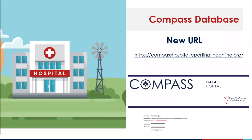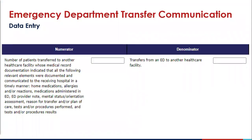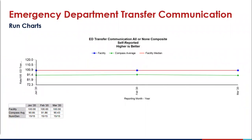We wanted to share that we have a new URL for the Compass data portal. Currently the old URL auto-links to the new URL, but this linkage will be short-term, so please plan to save it to your favorites. When we talk about data entry into the Compass data portal, this is a sample of what that looks like. This data portal has been in place for years as a convenience to our hospital data entry people — it reduces having to go to another area for data collection. All the measures are updated for the 2020 new measures for EDTC. Remember that you can pull the run chart from the Iowa Healthcare Collaborative data portal.